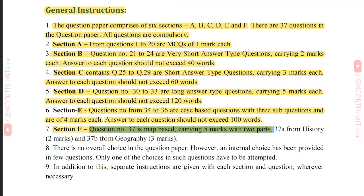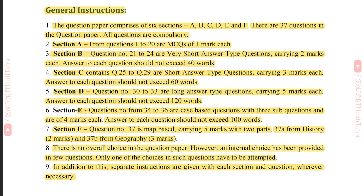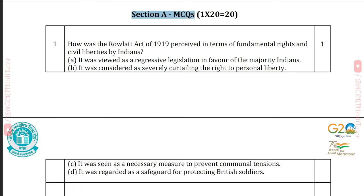Question 37A is from History, carrying 2 marks, and 37B is from Geography, carrying 3 marks. There is no overall choice in the question paper; however, an internal choice has been provided in a few questions — only one of the choices in such questions has to be attempted. Separate instructions are given with each section and question wherever necessary. Section A: MCQs, each question carries 1 mark, so Section A carries 20 marks.